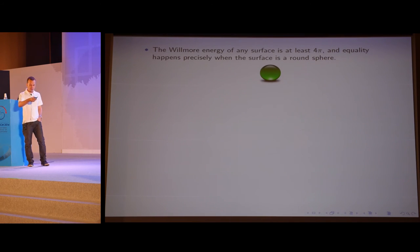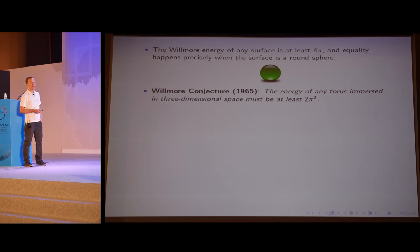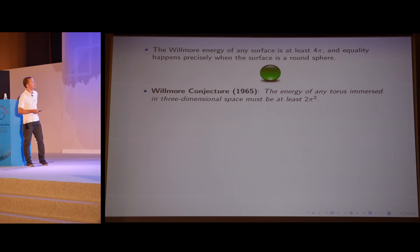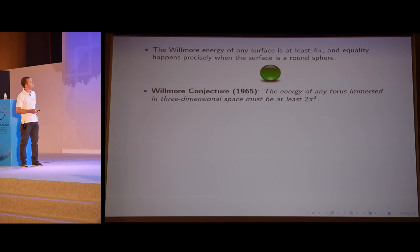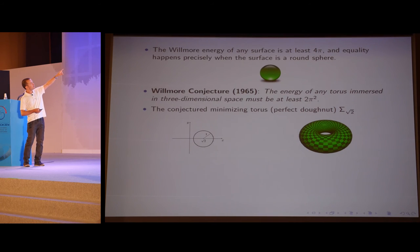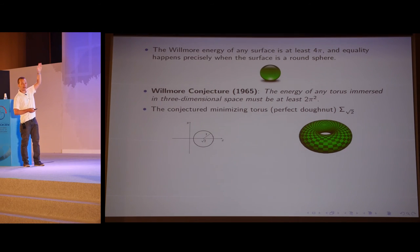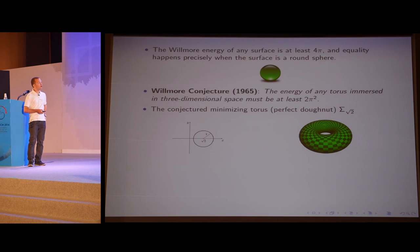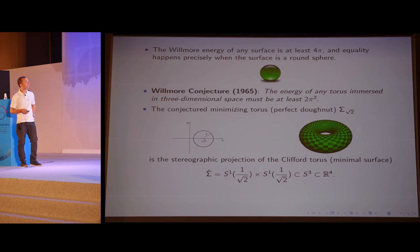Willmore proved in the early 1960s that the energy of any surface is greater than or equal to 4 pi, and that equality happens precisely when the surface is round. The best sphere should be the round one — it minimizes the Willmore energy among all surfaces in three-space. It's not so clear what the answer should be for tori. But Willmore made a prediction — the Willmore conjecture of 1965: the energy of any torus immersed in three-dimensional space must be at least 2 pi squared. The perfect doughnut can be obtained as a torus of revolution where the ratio of the distance from the center of the circle to the axis of revolution to the radius of the circle equals the square root of 2.